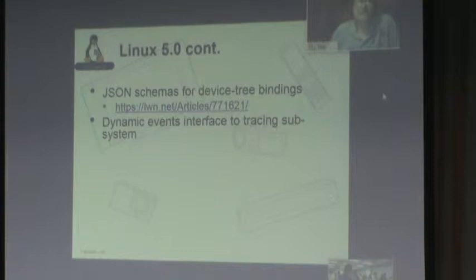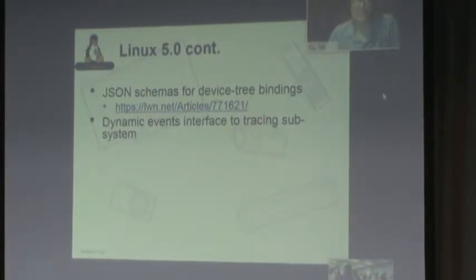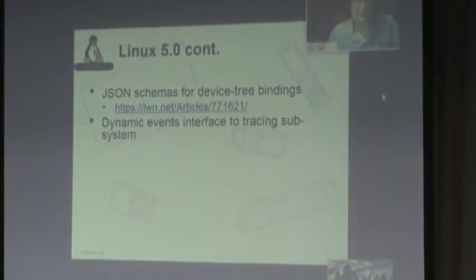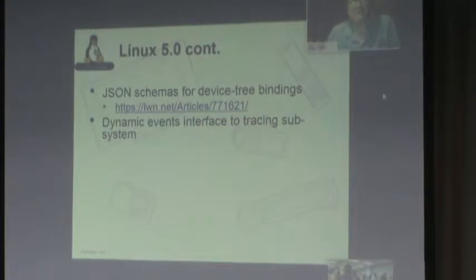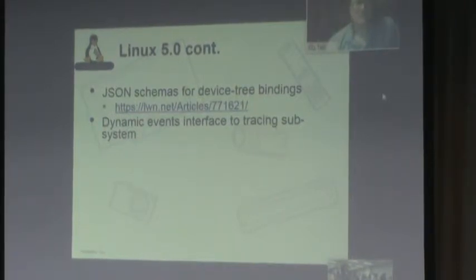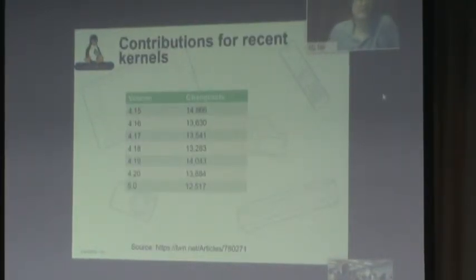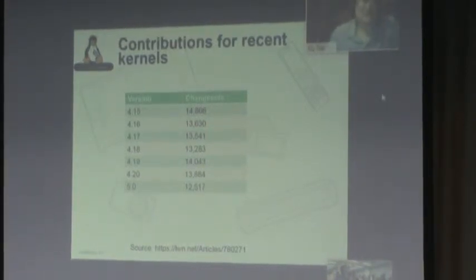A couple of other miscellaneous things: device trees are changing — we're now seeing JSON schemas for device tree bindings, which has been worked on for years. Previously the bindings were just human-readable English text with no type checking or validation possible. Now they're switching to a scheme where bindings can be validated to ensure correct values in fields. The ftrace subsystem also had some features added to support dynamic events. The 5.0 kernel had about 12,500 commits versus 4.19 which had 14,000 — it's just a run-of-the-mill kernel that happens to have a new major version number.